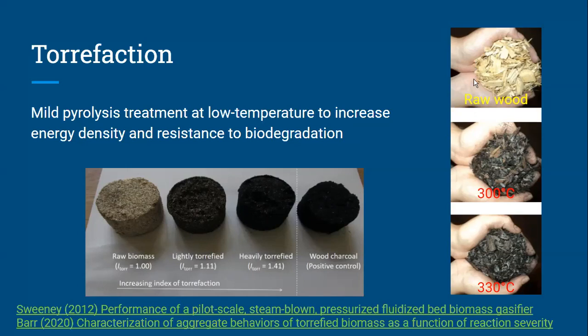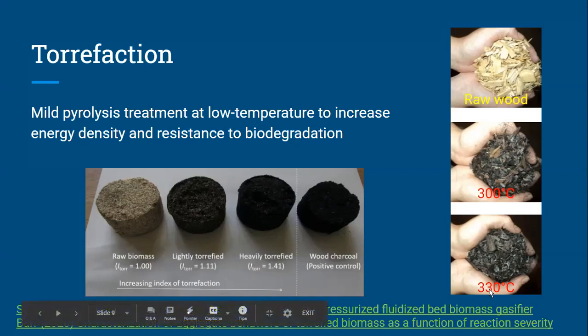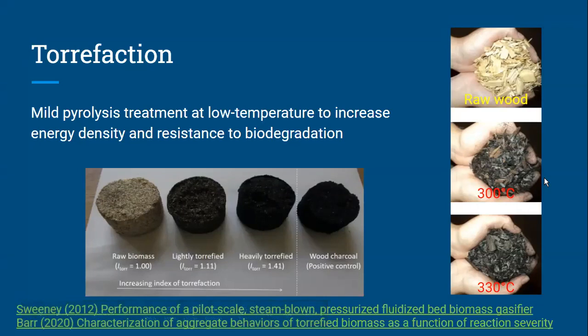So, we did some experiments where we torrefied wood chips. And so, I'm just showing here what it looked like going from raw wood to then wood that's been torrefied. We did torrefaction. We torrefied the wood at 300C and torrefaction at 330C. There's not a huge difference, but you might notice that it's a little more charred, a little darker in color.